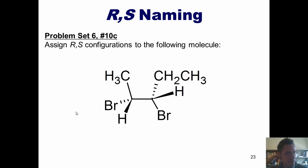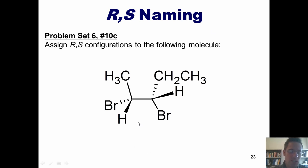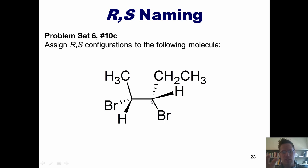Let's look at an example that's a little bit more complicated. I want you to assign R and S configurations to this molecule. The reason this is more complicated is because this molecule has two stereocenters, one located here and the other located here. In order to assign R and S to this molecule, we have to do so to each of its individual stereocenters.